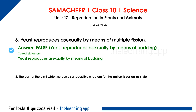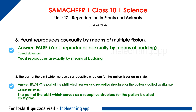Fourth question: the part of the pistil which serves as a receptive structure for the pollen is called style. This is false. The correct statement is: the receptive structure for the pollen is called stigma.